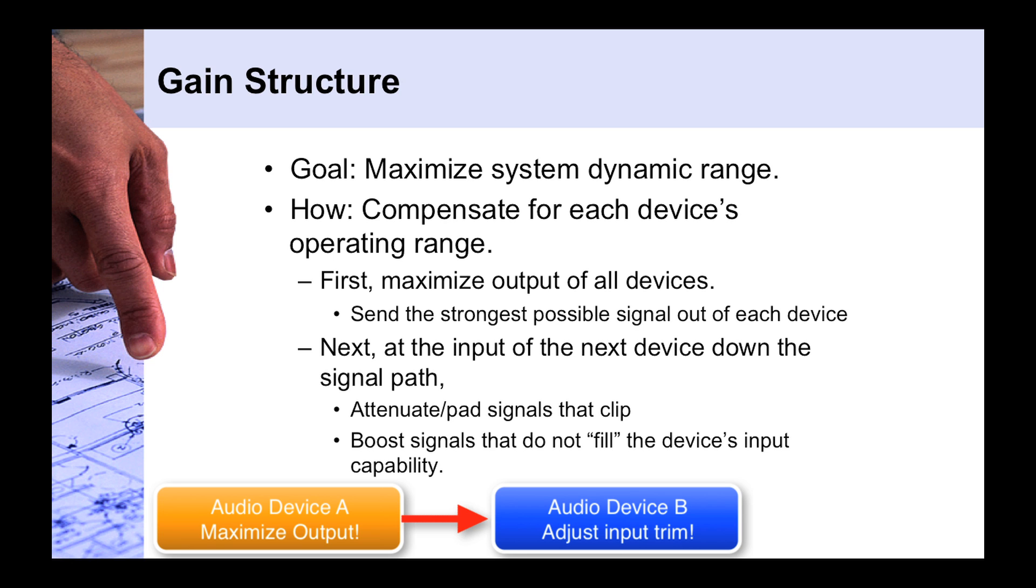So typically you will have either a trim or gain control or perhaps simply an attenuation control at the input of the device. So if you have a knob that says input gain or trim, something like that, that's where you would adjust this to compensate for the level of the signal incoming into that device.